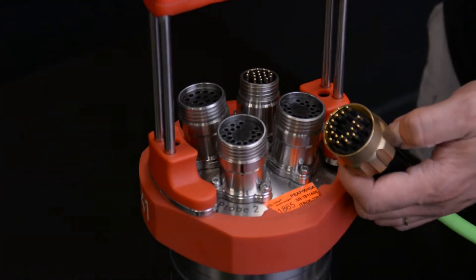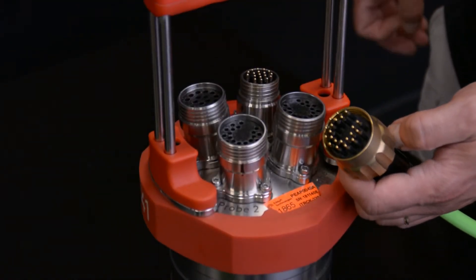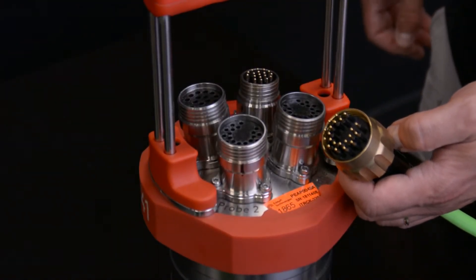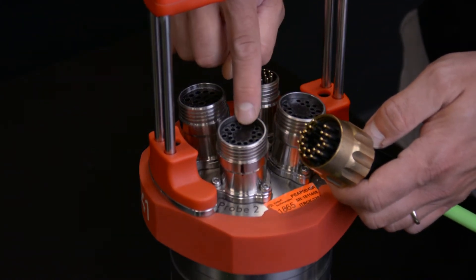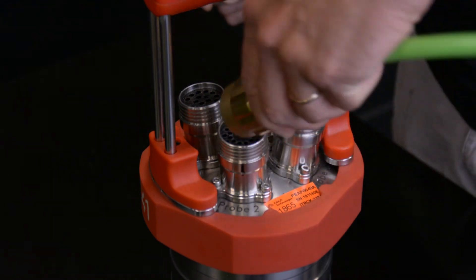The orientation of the probe connector is easier to identify due to the missing pins on one side of the two concentric rings. These should be aligned with the corresponding gap in the socket connector on the bottle.